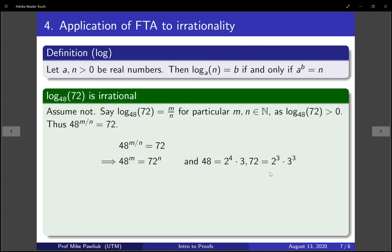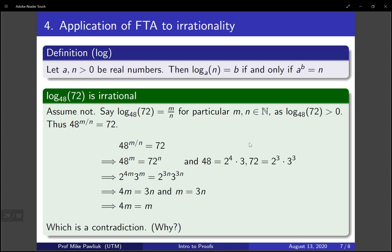To remind you, a prime decomposition of 48 and 72 is as follows. So, now, replacing these with 48 and 72, we get the following. And by the fundamental theorem of arithmetic, we know that these representations have to be unique. So, this tells us that the powers of 2 have to be the same, and the powers of 3 have to be the same. So, this is by the fundamental theorem of arithmetic. Now, what does this system of equations give us? Well, it gives us that 4m is equal to m, and that's a contradiction. I'll let you think about why it's a contradiction. This gives us an example of how to prove that something is irrational using the fundamental theorem of arithmetic.